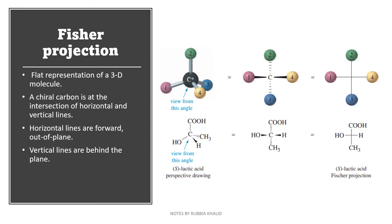Next, we have Fischer projection. Flat representation of a 3D molecule is called Fischer projection. A chiral carbon is at the intersection of horizontal and vertical lines. Horizontal lines are forward out of plane and vertical lines are behind the plane. These are vertical lines behind the plane, and the horizontal lines are forward out of the plane. So out of the plane. This is the example of Fischer projection which is a 3D molecule, flat representation of a 3D molecule.